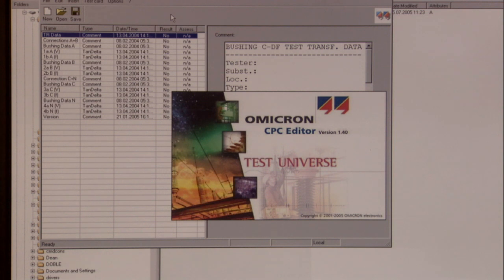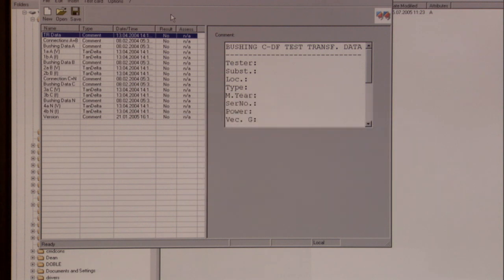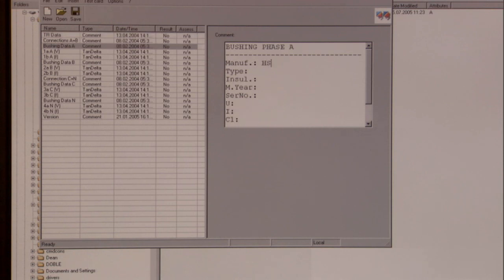Let's open a test template with the CPC Editor. Now we prepare power factor or dissipation factor measurements for the bushings on phases A, B and C and the neutral conductor.